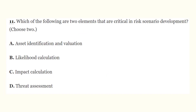Question 11: Which of the following are two elements that are critical in risk scenario development — choose two? The correct answers are asset identification and evaluation, and threat assessment. To develop risk scenarios you need to know details about assets such as criticality and their value, vulnerabilities, threat agents, and threats. Likelihood and impact are not necessary to create risk scenarios but are necessary to evaluate and assess risk.